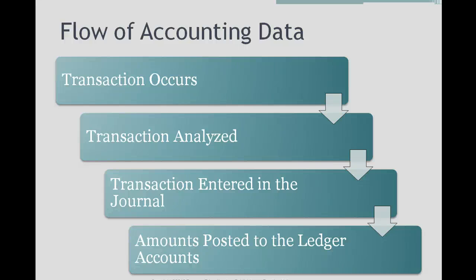Let's take a look at the flow of accounting data. These four steps represent the first four steps of getting the data into the financial statements. The first step is that a transaction occurs. Once a transaction occurs, we analyze it. Once a transaction is analyzed, we enter it in the journal. And finally, the amounts are posted to the ledger accounts, which are the T accounts that I have been showing you in the earlier sections.